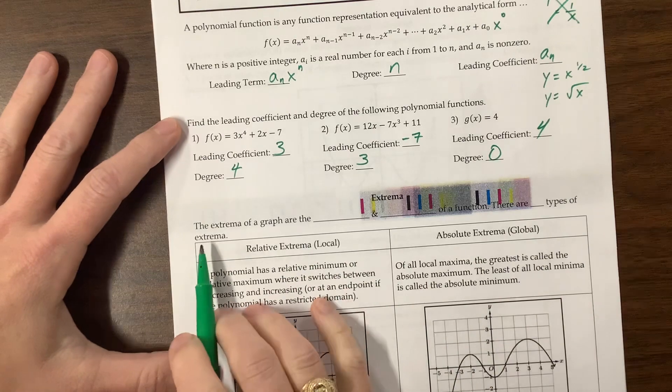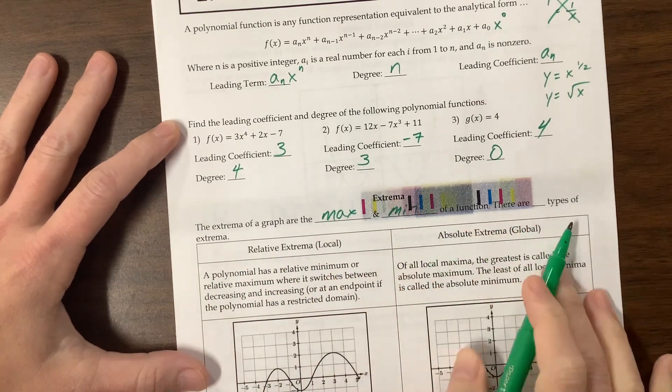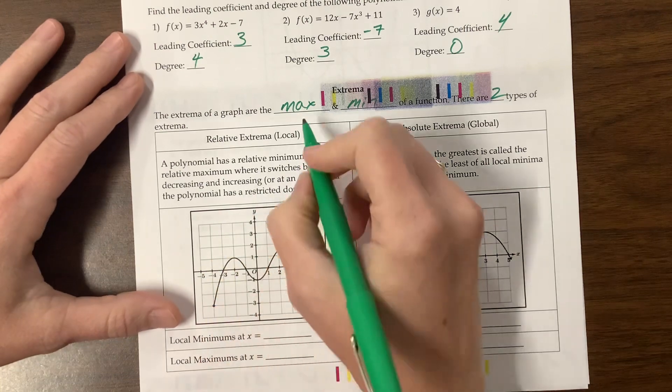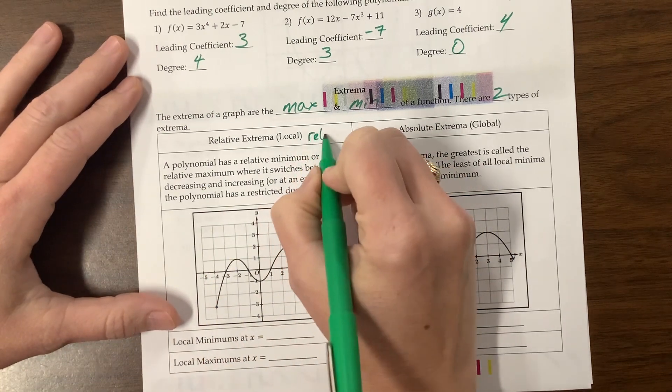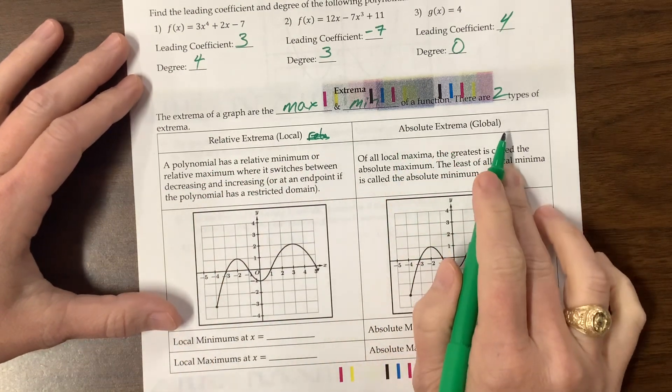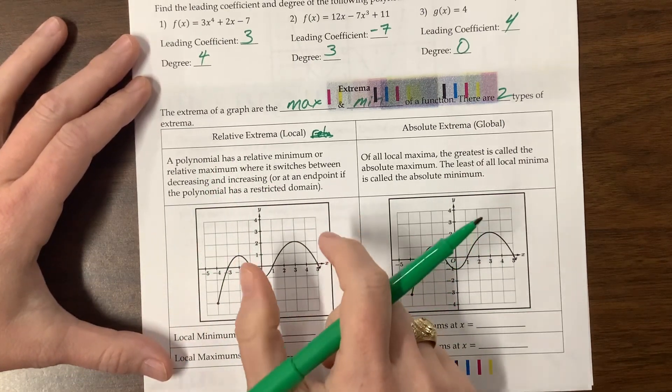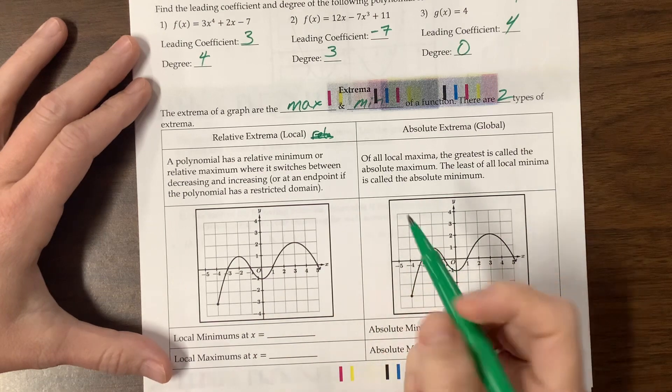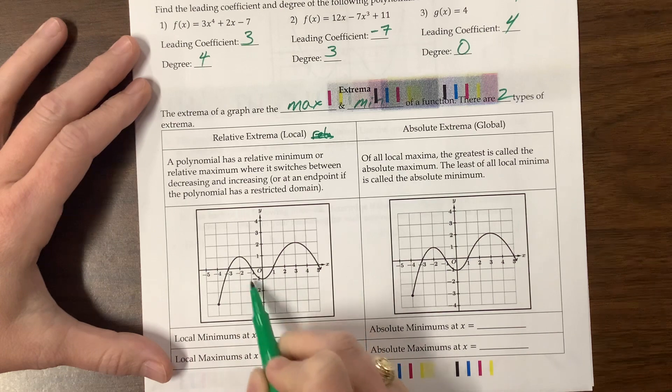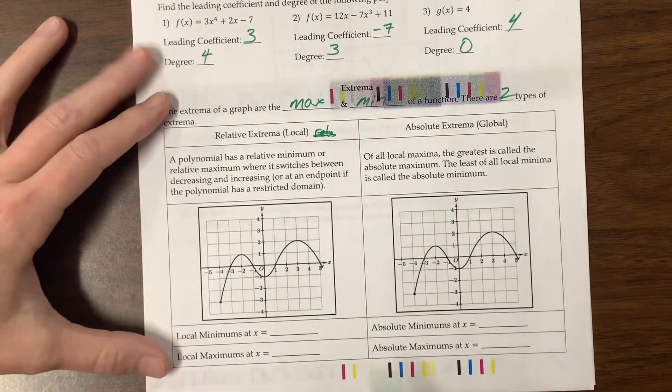Now on this one, it says the extrema of a graph are the max and min of a function. There are two types of extrema. You have local, you could also call them relative. Relative extrema are also local. Absolute extrema are also global. So the relative is on a particular area of the graph. It is the relative in this, like in this, we're living in this world and we have a maximum. We're living in this world and we have a minimum. We're living in this world, we have a maximum, that sort of situation.